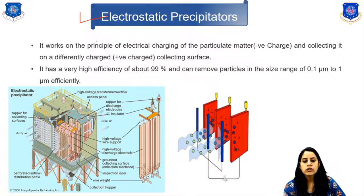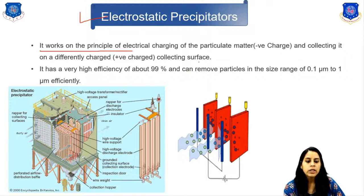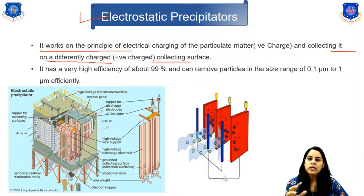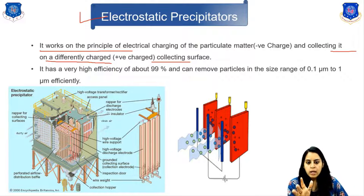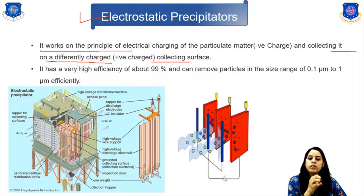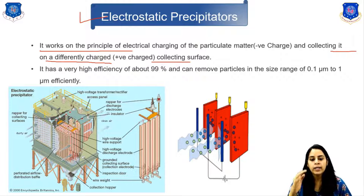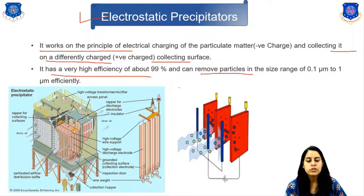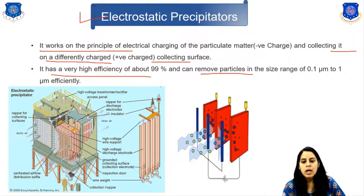The next device is the electrostatic precipitator. It works on the principle of electrically charging particulate matter — positively or negatively — and collecting it on a differently charged collecting surface. If particles carry a positive ion, they are attracted to the negative surface and collected. It has very high efficiency of about 99% and can remove particles in the size range of 0.1 to 1 micrometer efficiently.